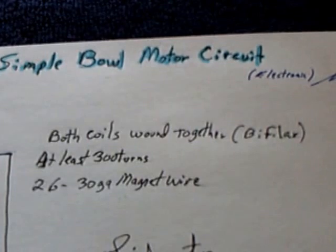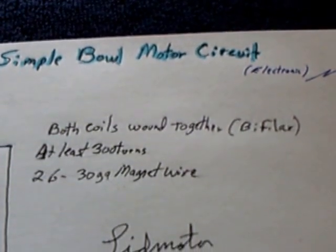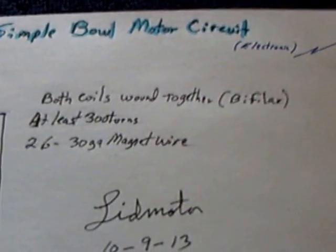I just called this the simple bowl motor circuit, the electronic version. Jack has shown this with the Newman motor commutator brush system too. But this is the key to it here.